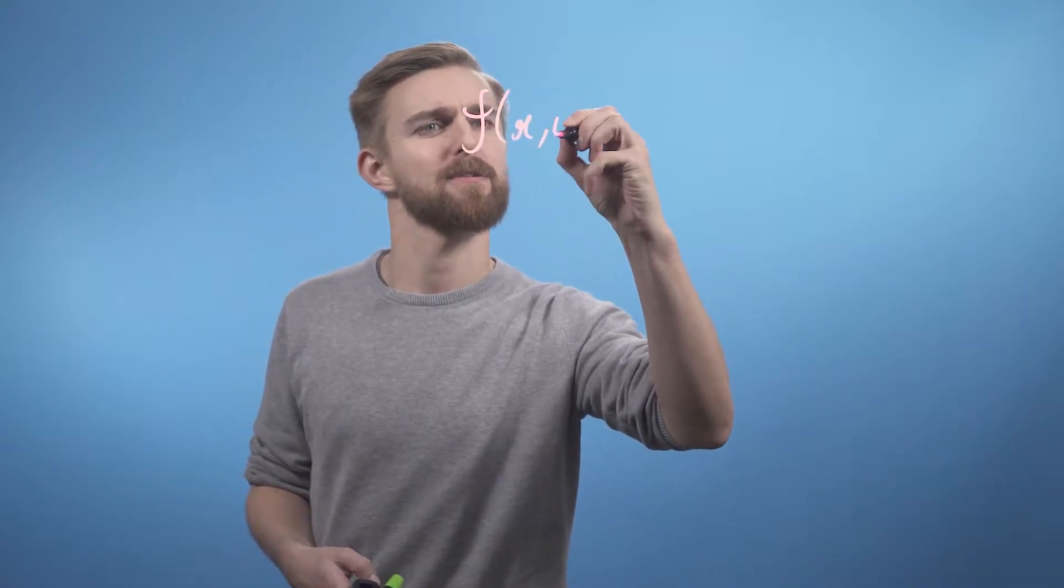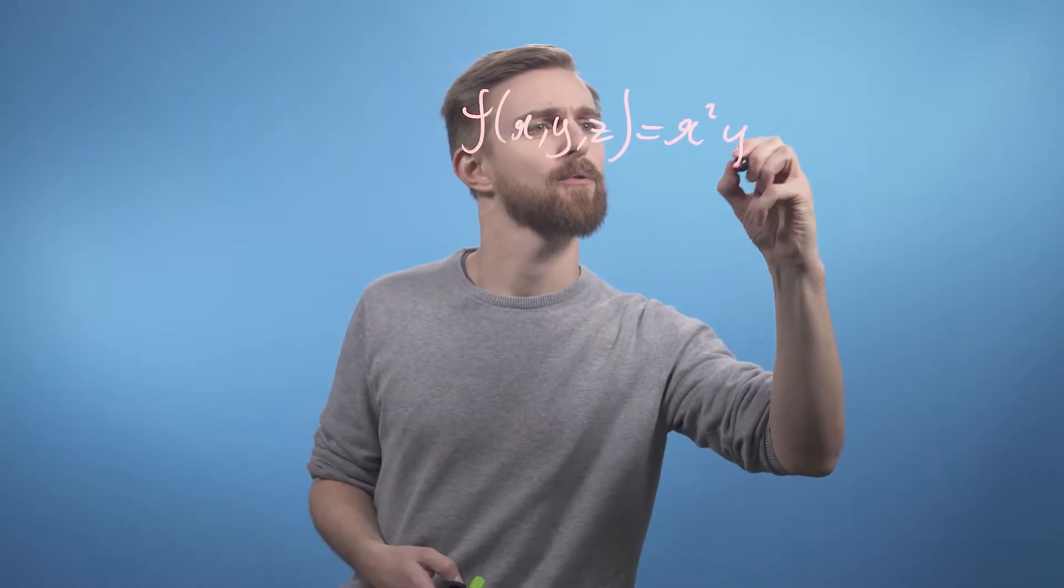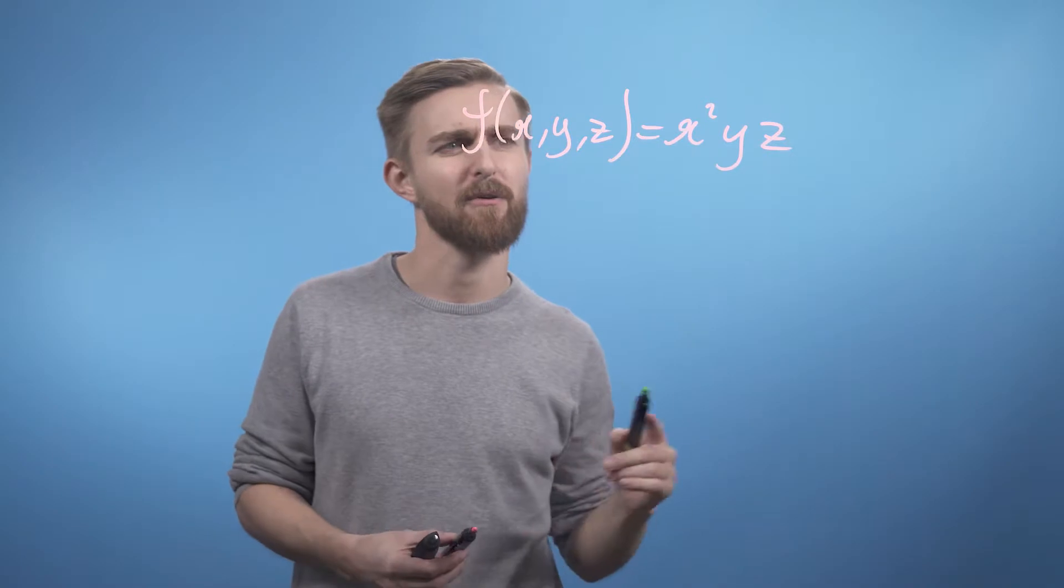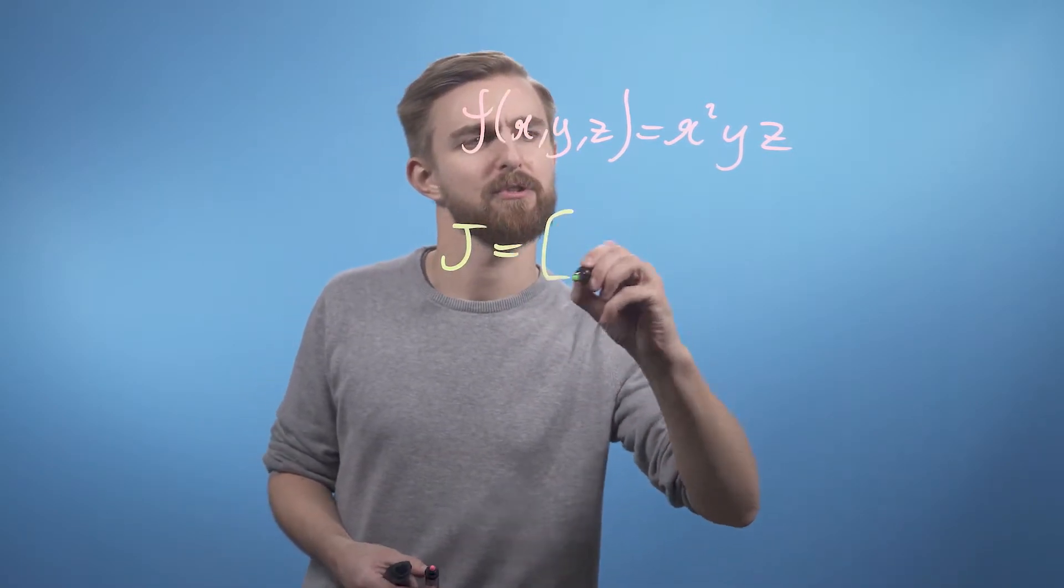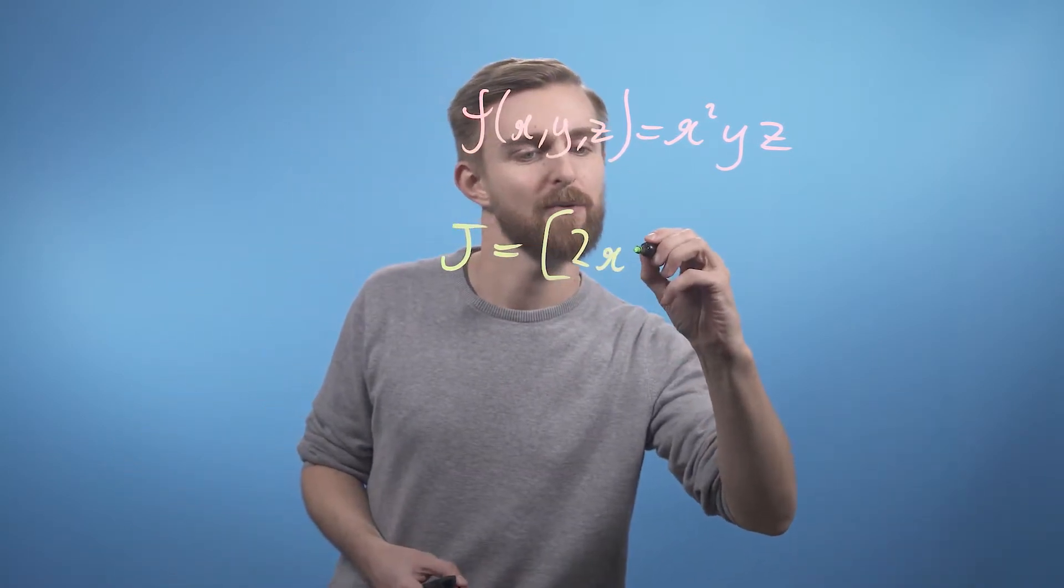So, for our function, f of x, y, and z equals x squared yz. We're going to first build the Jacobian for this thing, which of course is going to be j equals, so we've got differentiate with respect to x, we get 2xyz.